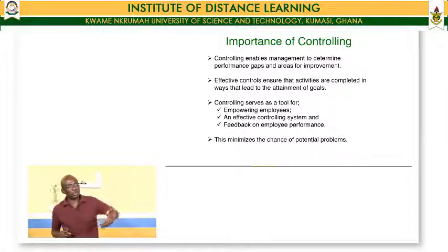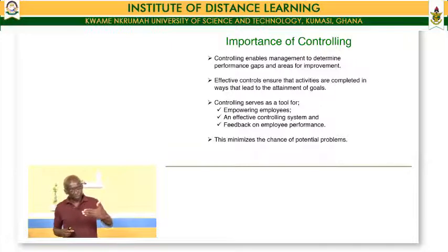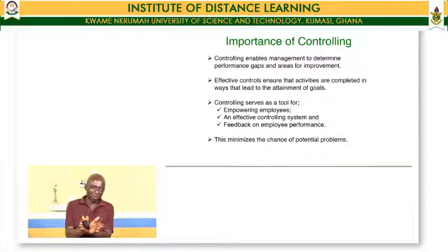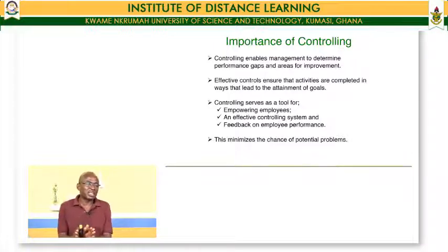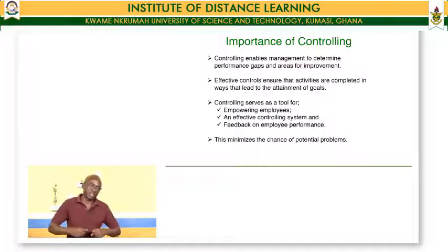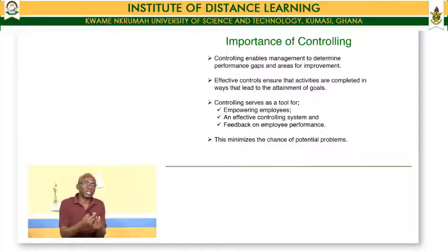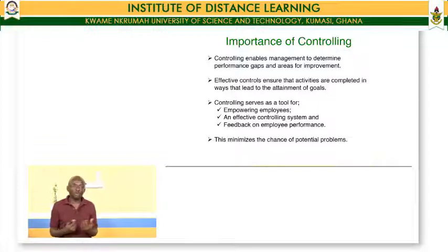When the employee is working and we observe that the employee is either on track or off track, the responses given to the employee make the employee aware of where they stand. If the employee is on the right track and we commend the person, the person is empowered and their morale is boosted. If the person is on the wrong side and we provide corrective measures, it motivates the person to learn to do better next time. So controlling minimizes the chances of potential problems.